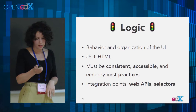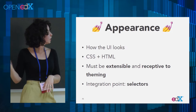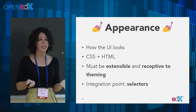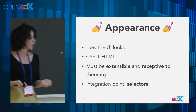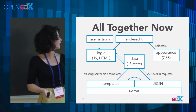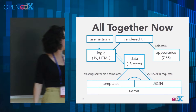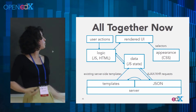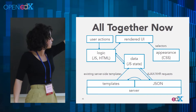And appearance — this is how the UI looks, pretty much all CSS. It needs to be extensible and we want it to be themable too, since a lot of people theme their Open edX instances. CSS only really relates to the rest of the DOM with its selectors. Here's a complex diagram of how it all works together: data flows up from the server into the data layer, business logic handles generating the page which then gets styled by appearance, and user actions and form submissions flow back down through the logic layer to the data layer over to the server.